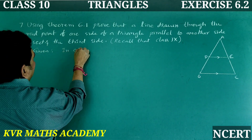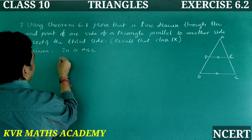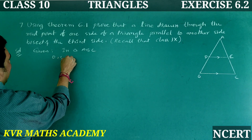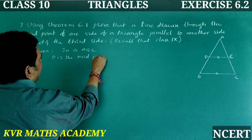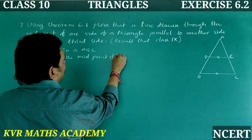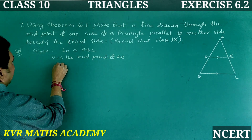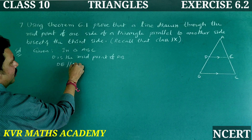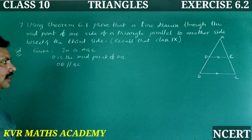Solution — Given: In triangle ABC, D is the midpoint of AB, and DE is parallel to BC.